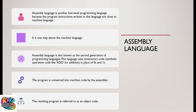The second type of low-level language is assembly language. Assembly language is another low-level language because the program instructions are close to machine language — it is just one step above machine language. Assembly language is also known as the second generation of programming languages. It uses mnemonics — symbolic codes like ADD for addition — in place of zeros and ones. The assembly language is then converted into machine code by what we call the assembler.